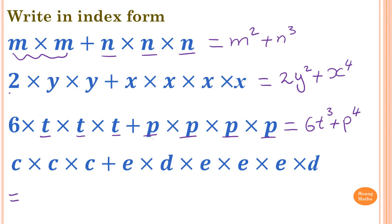For the last one: C times C times C, which is C to the power of 3. For the second term, write a plus first. D times D is D squared. And for E, counting 1, 2, 3, 4 — so E times E times E times E, which is E to the power of 4.